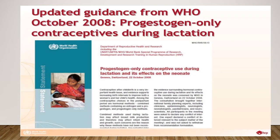Contraception after childbirth is a very important health issue, and evidence supports increasing birth intervals to improve both a woman's and a child's health. Hormonal contraceptive choices in the postpartum period include combined methods containing estrogen and progesterone, and progestogen-only methods. The use of progestogen-only methods — with exception of the levonorgestrel-bearing IUD — is not usually recommended for women less than 6 weeks postpartum who are breastfeeding, unless other more appropriate methods are unavailable. The levonorgestrel-bearing IUD is not usually recommended for the first 4 weeks postpartum.